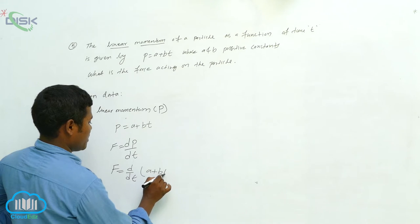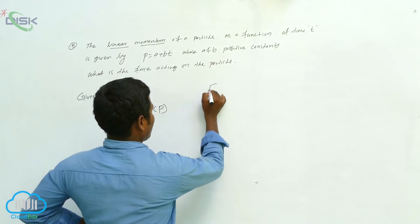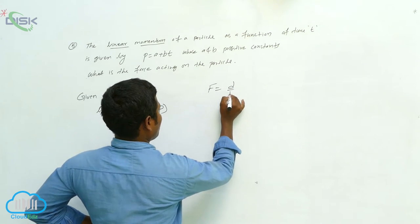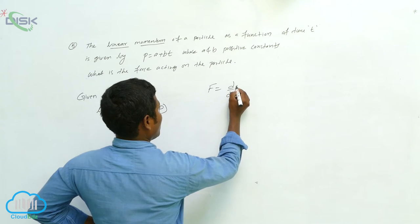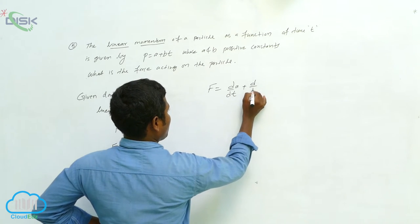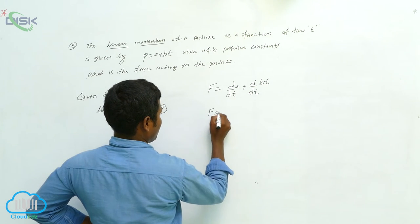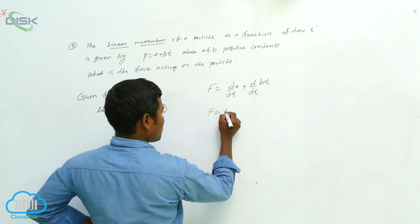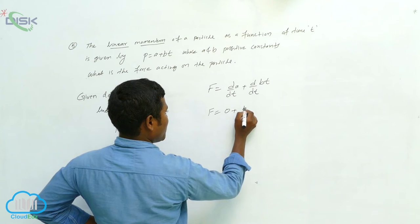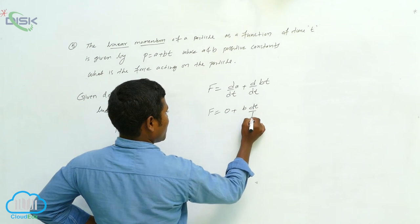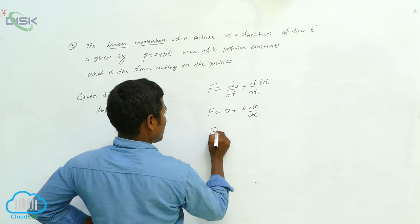A plus bt. Next, F equals d/dt of a, next d/dt of bt. da/dt means constant, means zero. Then b times dt/dt, how much? One. Then what happens?